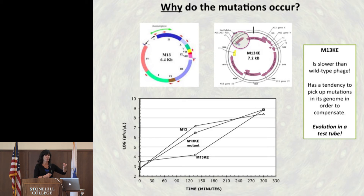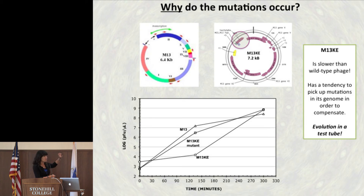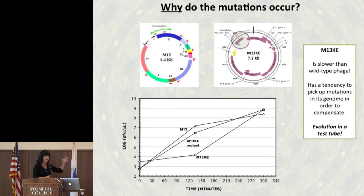That big piece makes the genome a lot bigger — 7.2 kilobases instead of 6.4 — and it's inserted in a sensitive area, which may affect the way the phage copies itself. As a result, this engineered phage grows more slowly than the original natural version found in the sewers. The mutations allow the engineered version to be faster, as if it's trying to get back to where evolution had brought the natural version — a kind of re-evolution.